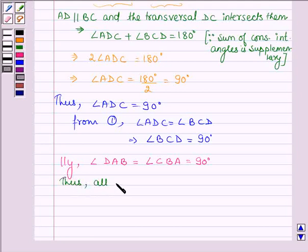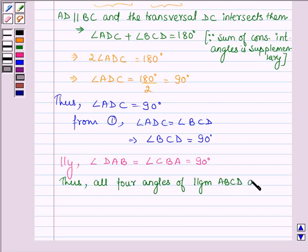Thus, all four angles of parallelogram ABCD are 90 degrees each. So this implies parallelogram ABCD is a rectangle.